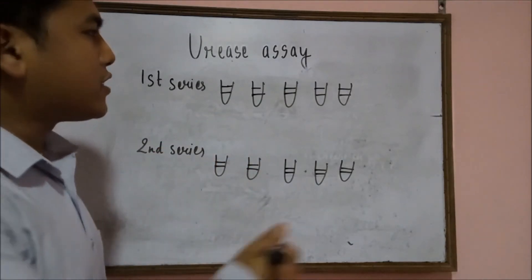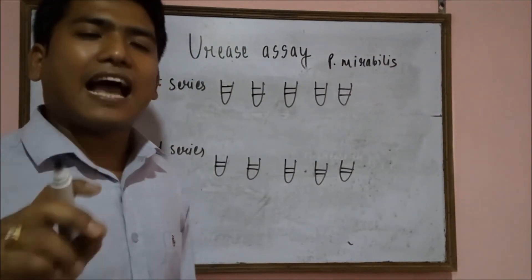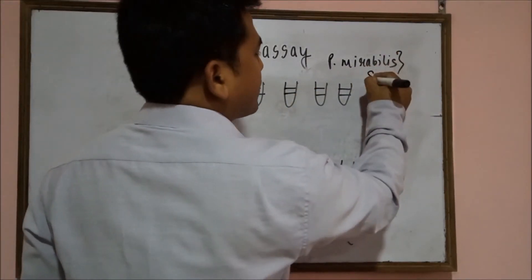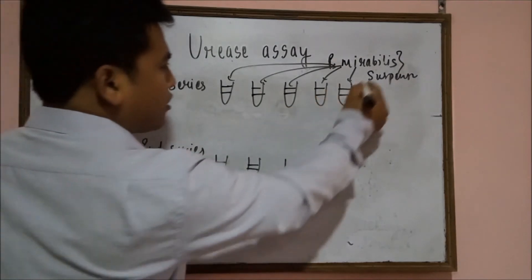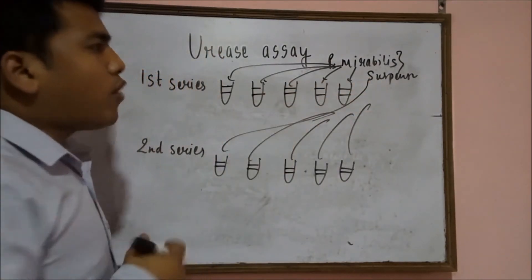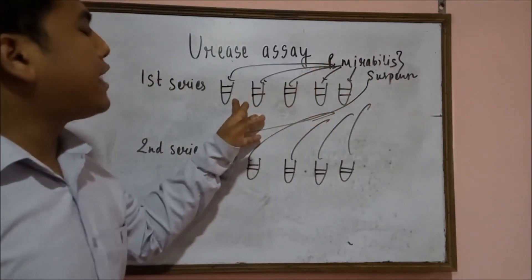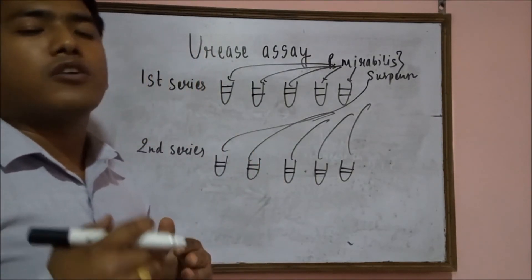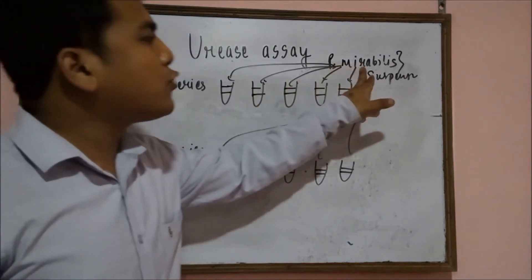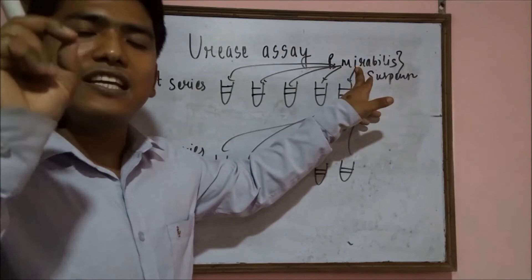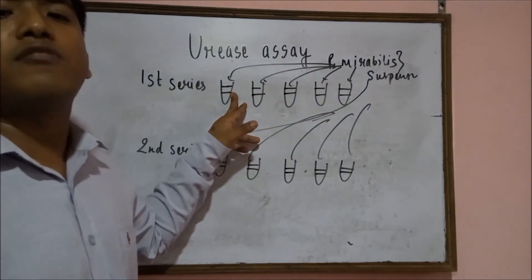Then you add the bacteria — Proteus mirabilis suspension. This suspension contains urea. You add the Proteus mirabilis suspension into each test tube, which contains the urea. In the second series you do the same. What happens is that the antibiotics will try to inhibit the Proteus mirabilis, but due to insufficient concentration of antibiotics, not all the Proteus mirabilis are inhibited. Hence, there will be some production of the urease enzyme, which will convert the urea in the media into ammonia, raising the pH of the media.